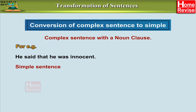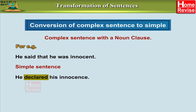So, 'He said that he was innocent' is the complex sentence, and the simple sentence is 'He declared his innocence.' What have we done? We have changed 'said that' into only one verb, which is 'declared,' and 'innocent,' which is an adjective, has been changed into a noun — 'innocence.' So the sentence becomes: he declared his innocence.